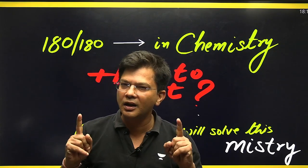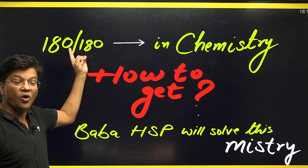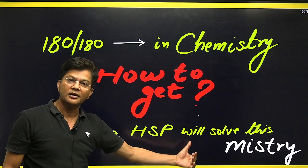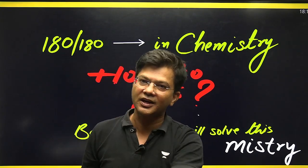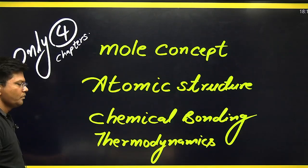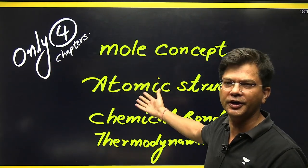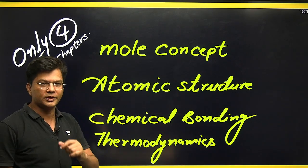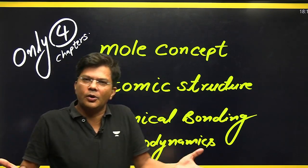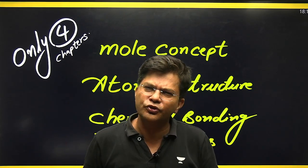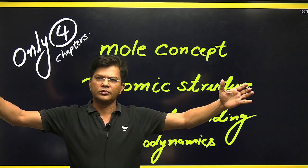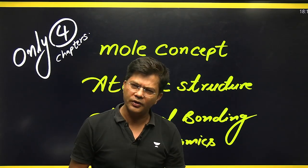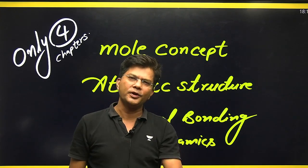The million dollar question is how to get 180 on 180 in chemistry. Your Baba HSP will solve this mystery. Only four chapters — written right here — these four chapters will give you 180 on 180. Mark my words, I will prove it. Chemistry is very wide, many chapters are there, but just wait one minute and I will prove it.